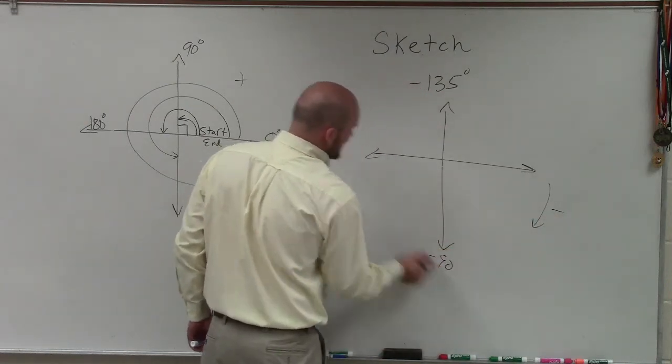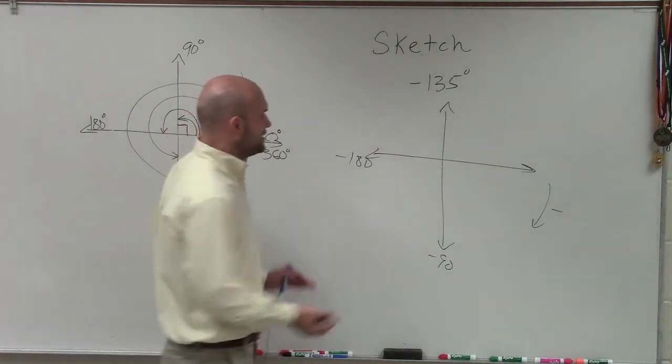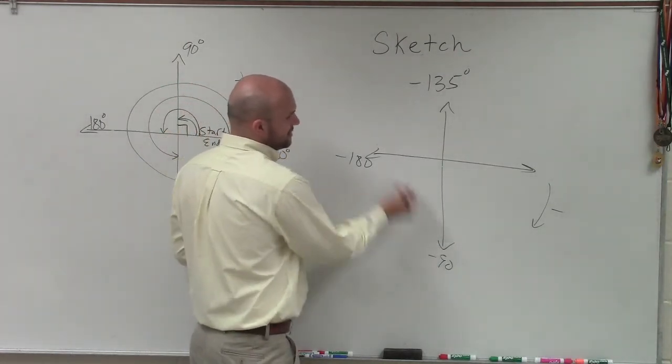But if this is represented as negative 90, and this is represented as 180 in the negative direction, I know 135 is going to be roughly in between there.